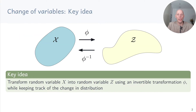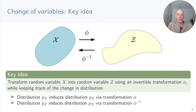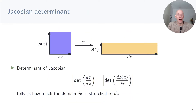The key idea behind the change of variables is that we transform a random variable x into a random variable z using an invertible transformation phi, while keeping track of the change in distribution. The distribution p of x induces a distribution p of z via phi, and the distribution p of z induces a distribution p of x via phi inverse.